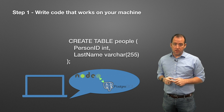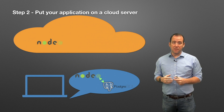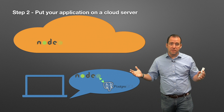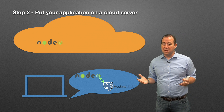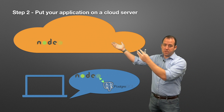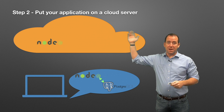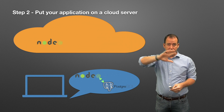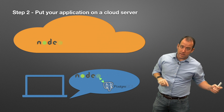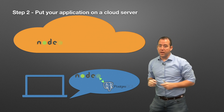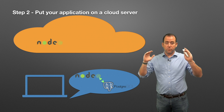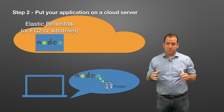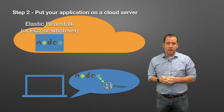Now you've got code that works on your machine. The next step is to put that code on a cloud application server. I'll use some AWS examples here, but it doesn't matter whether you're deploying to AWS or something else — you just need a server somewhere on the internet where people can reach it. We'll take that Node.js code and put it on the application server, using Elastic Beanstalk as our example.